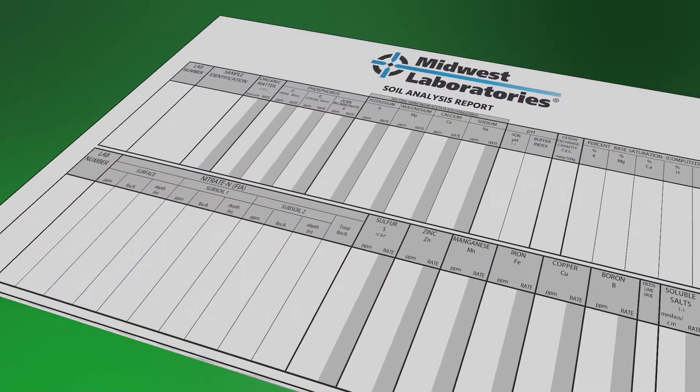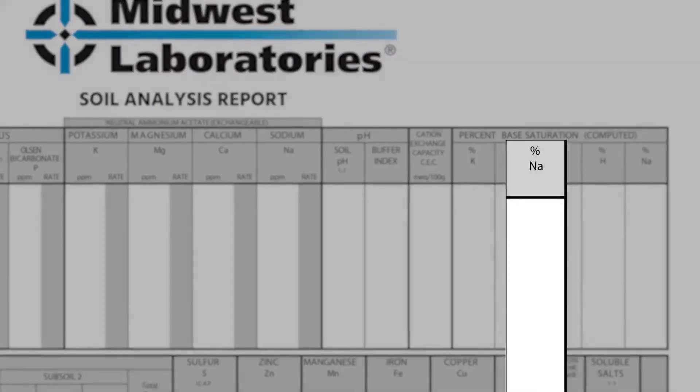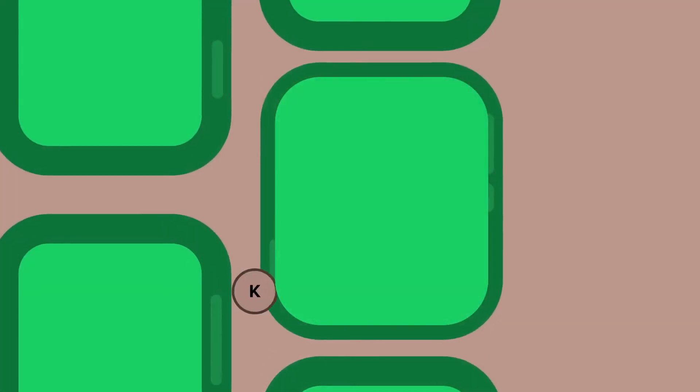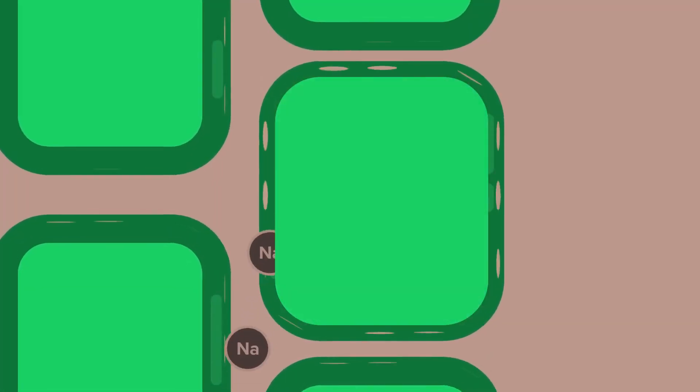Sodium is another cation we look at on percent-based saturation. It often comes from outside sources and tends to have a negative effect on the soil. One thing to be aware of is if your sodium level gets above your percent-based saturation of potassium, the plant can actually take up sodium instead of potassium. Where potassium strengthens cell walls, sodium will actually split or deteriorate cell walls, causing moisture loss. One indicator of excess sodium is when, two days after an irrigation, the crop looks droughty again.